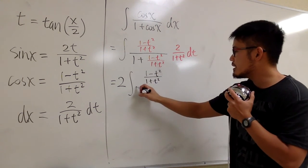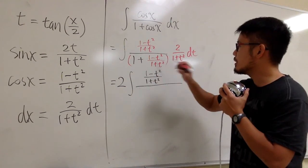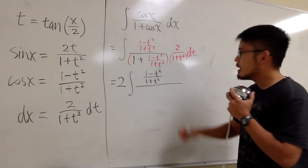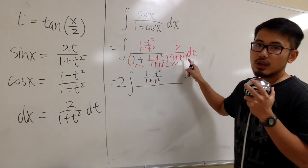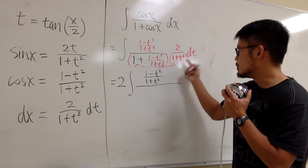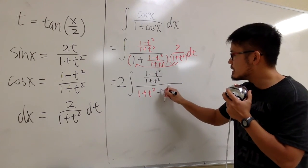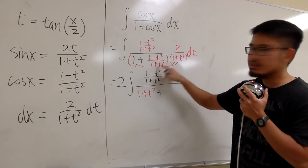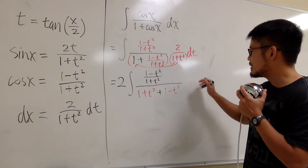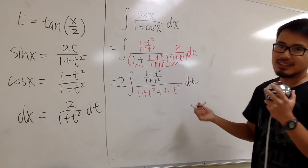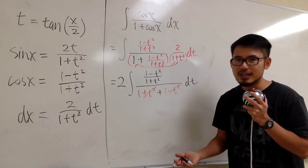Let's look at the denominator to see what we have. This part technically has a parenthesis, and likewise this should also have a parenthesis. When we distribute: this times 1 gives us (1 + t²), and then we add this times that — those (1 + t²) terms cancel, so we just have (1 - t²) remaining.